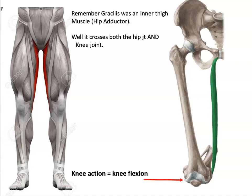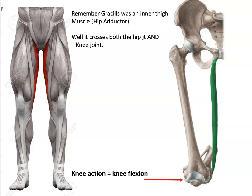Make sure you fill out all your worksheets for the knee extenders and knee flexors. These are pretty easy. Now we're going to go on to dorsiflexion and plantarflexion — actions that only take place at the ankle. Dorsiflexion: the dorsum of your foot is pulled up towards your shin; these are anterior muscles. Plantarflexion: these are posterior muscles — like pointing your toe or standing on your tippy toes.